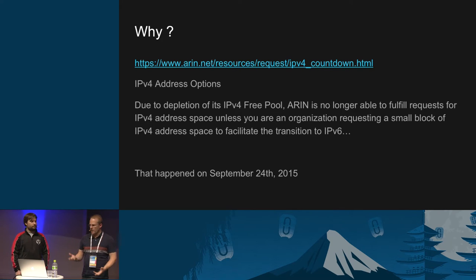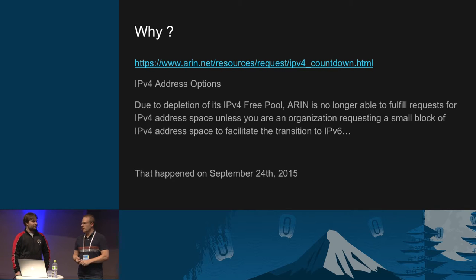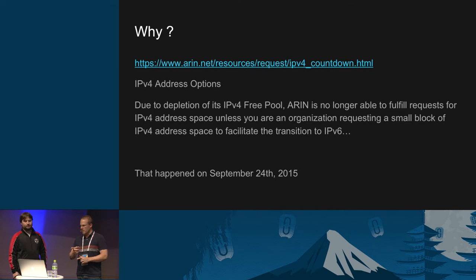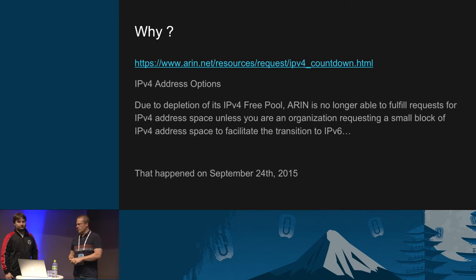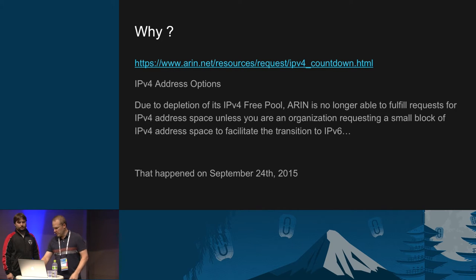So why would we want to do this? I don't think you're allowed to have an IPv6 presentation without a slide about how long it's going to be before all the IPv4 addresses in North America run out. On September 24th, just about a month ago, ARIN ran out of IPv4 addresses for handing out, with the caveat that they will hand them out to you if you use them to transition to IPv6. So we're at a critical point in time, at least in North America.